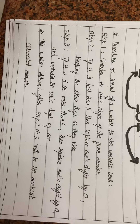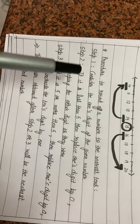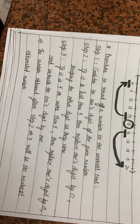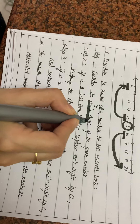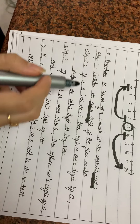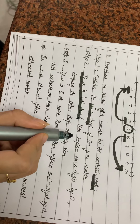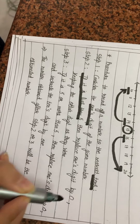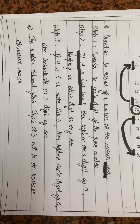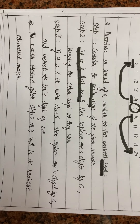Here is the procedure. Step 1: Consider the ones digit of the given number. Step 2: If it is less than 5, then replace the ones digit by 0, keeping the other digits as they were. Step 3: If it is 5 or more than 5, replace the ones digit by 0 and increase the tens digit by 1.